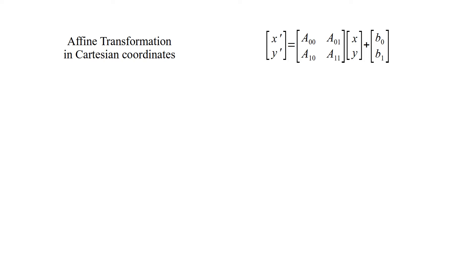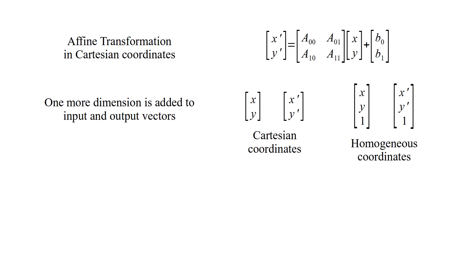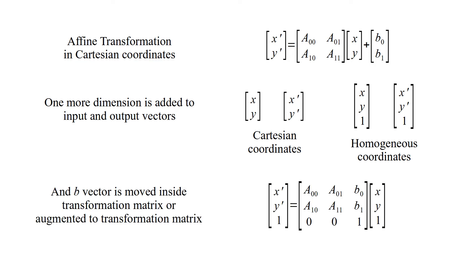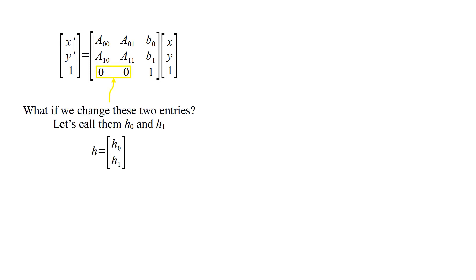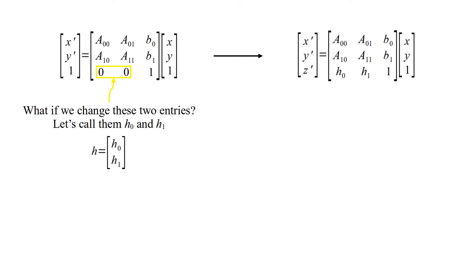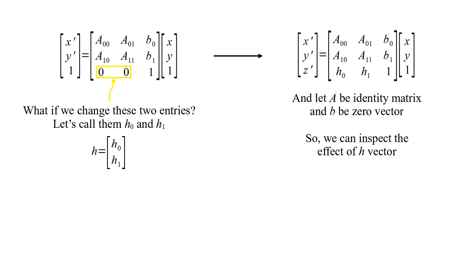This is the affine transformation equation in Cartesian coordinates. One more dimension is added to input and output vectors, and the b-vector is moved inside the transformation matrix — augmented to the transformation matrix. This is the affine transformation equation in homogeneous coordinates. Using this equation, an affine transformation is performed with a single matrix-vector multiplication. What if we change these two entries? Let's call them H0 and H1, and let A be the identity matrix and B be the zero vector, so we can inspect the effect of the H vector.